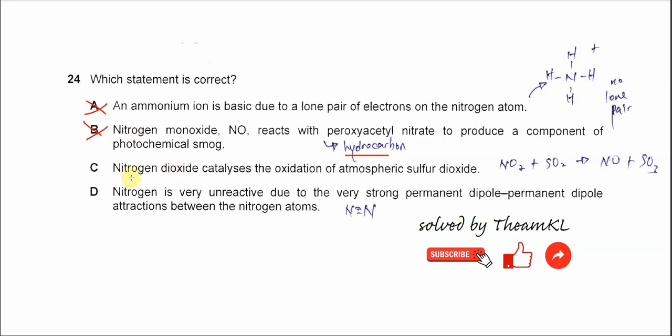C. Nitrogen dioxide catalyzes the oxidation of the atmospheric sulfur dioxide. This is correct. Nitrogen dioxide will oxidize the SO2 to SO3 and is self-reduced to the nitrogen monoxide. So this one is correct.